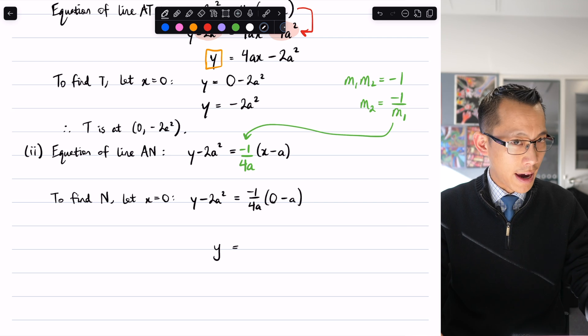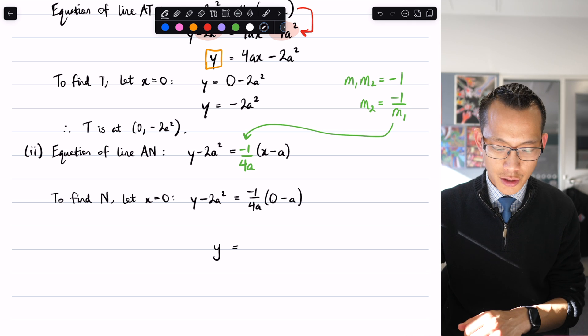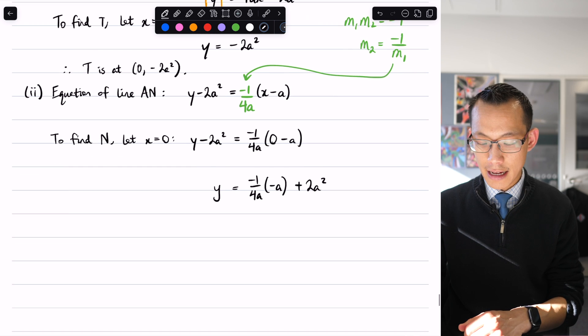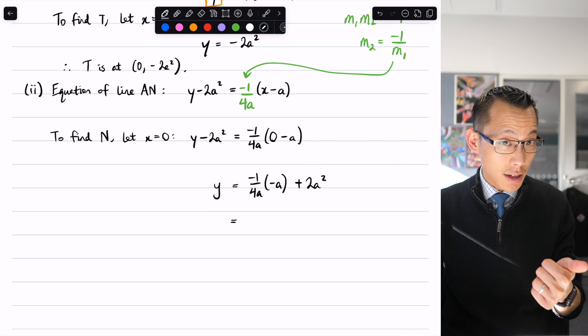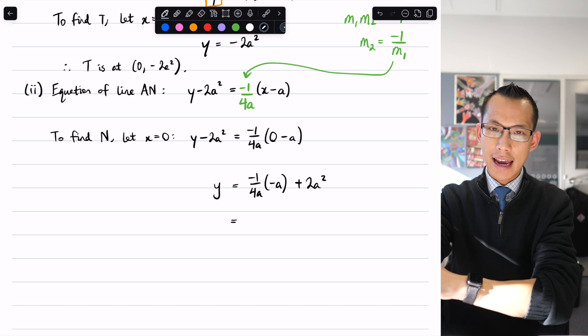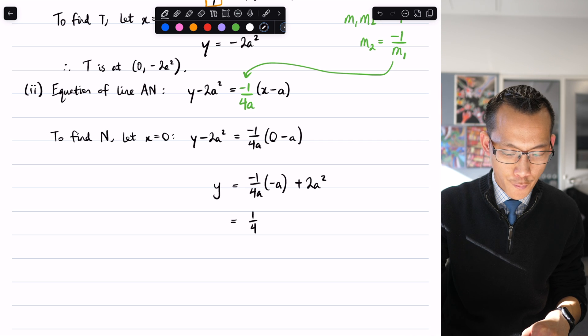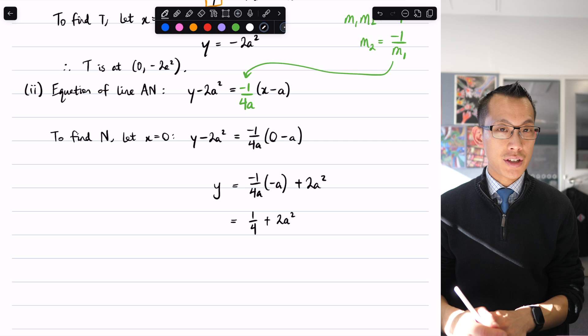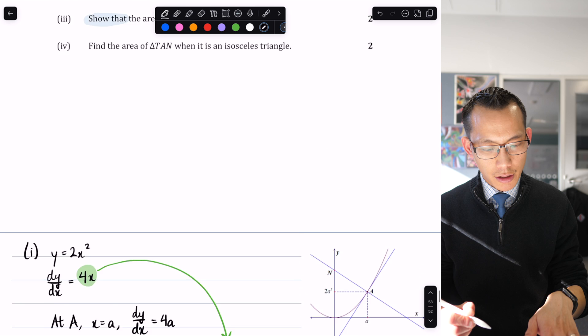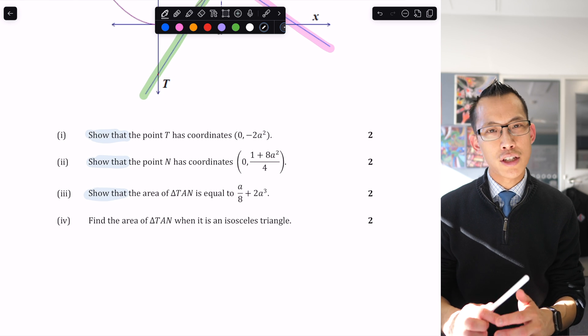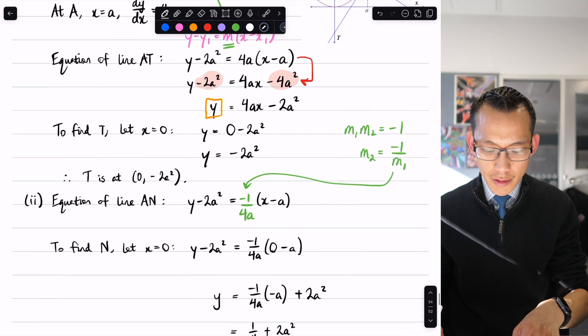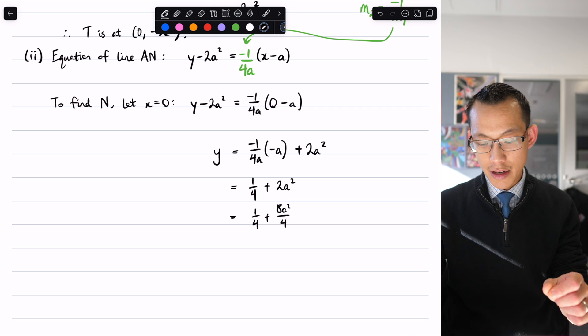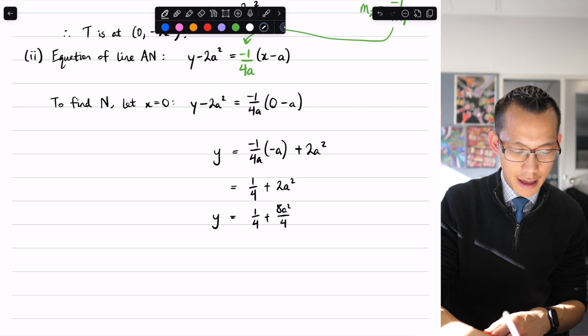Remembering that I do want the y coordinate, I'm going to go ahead and start to isolate that and make it the subject. So I'm going to get negative 1 over 4a times negative a plus 2a squared. You can see the negatives are going to cancel and the a's are going to cancel—I've got an a on the numerator and an a on the denominator—so I just end up with 1 over 4 plus 2a squared. Now I would normally instinctively say that looks good, however I then look back at the question and you can see they've phrased the y coordinate slightly differently, they've just put it all on one common denominator, all over 4. So therefore I'm going to say that's 1 over 4 plus 8a squared over 4.